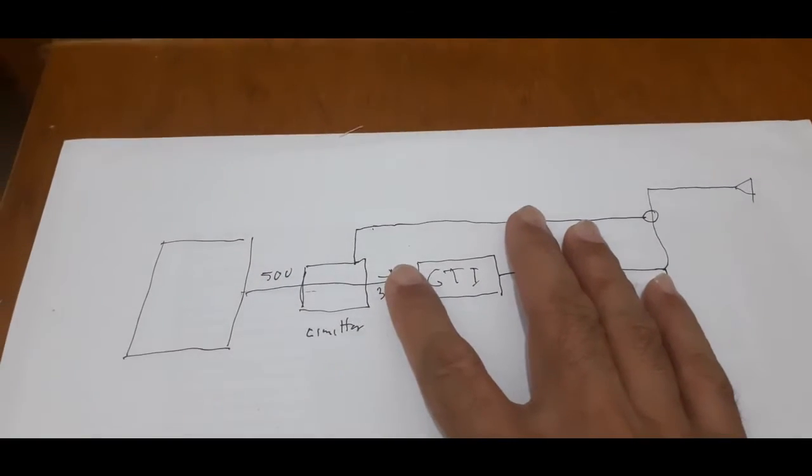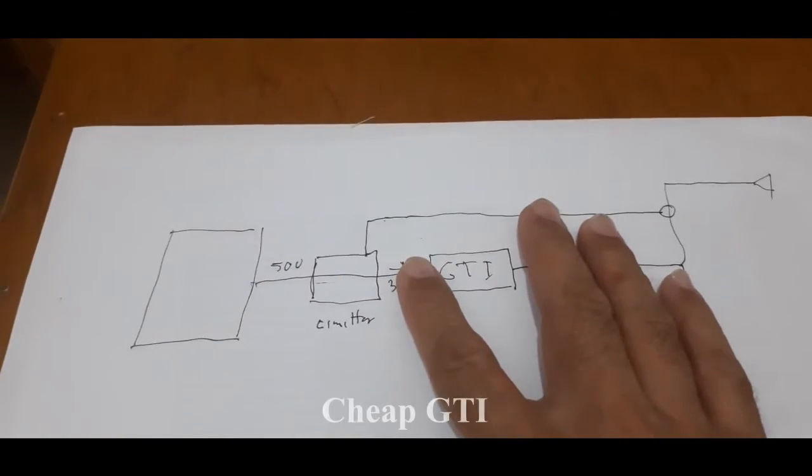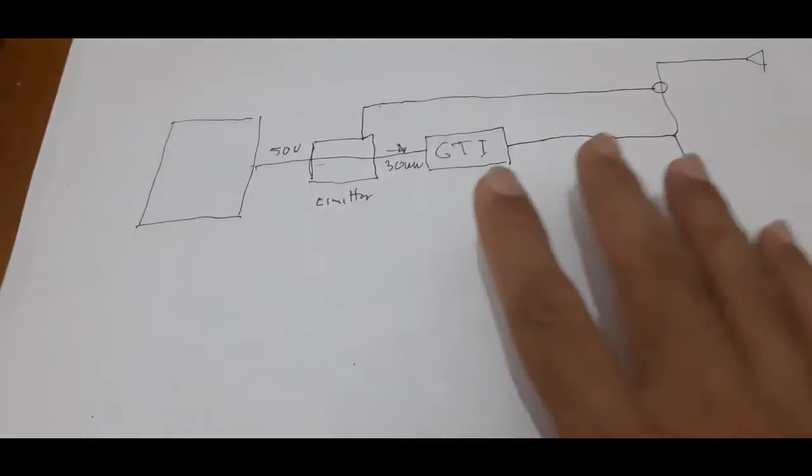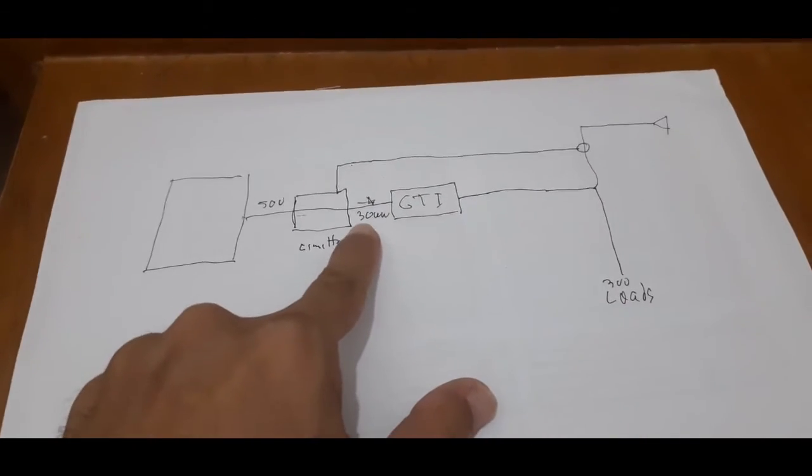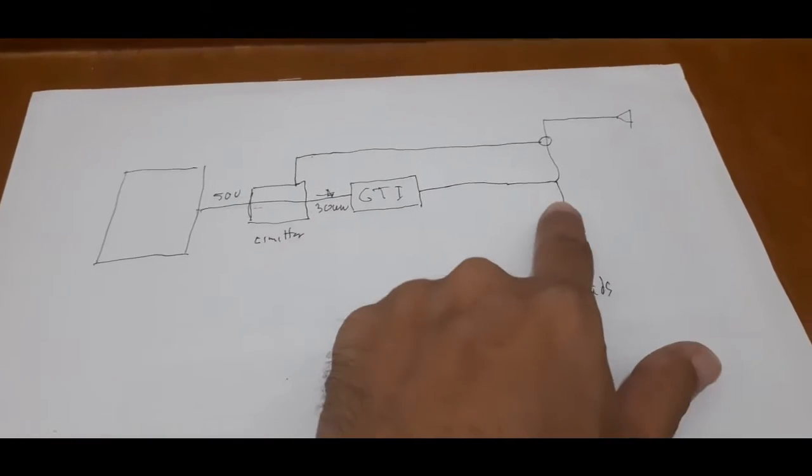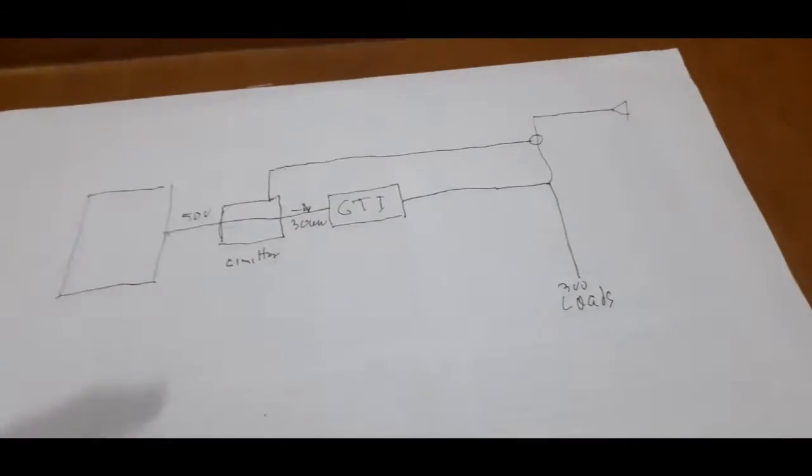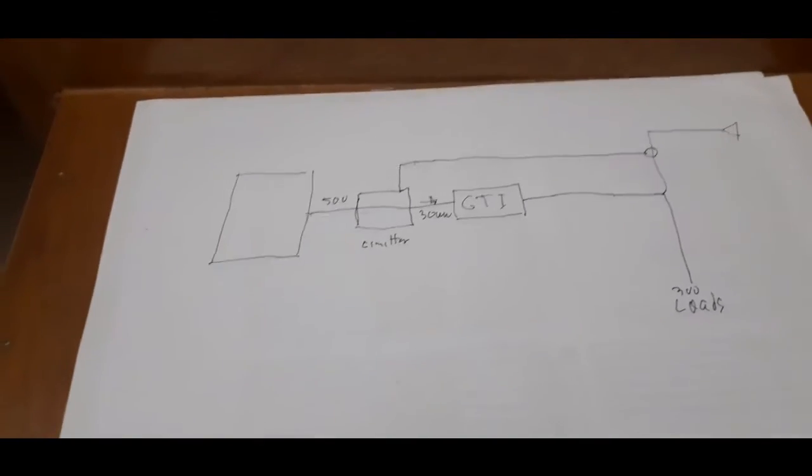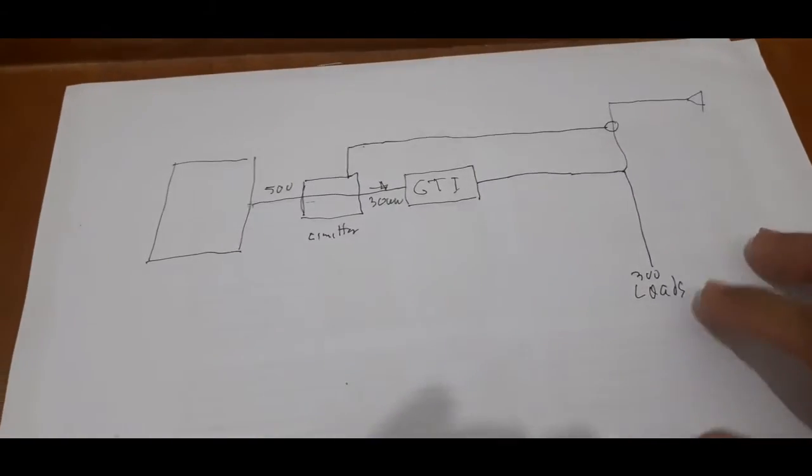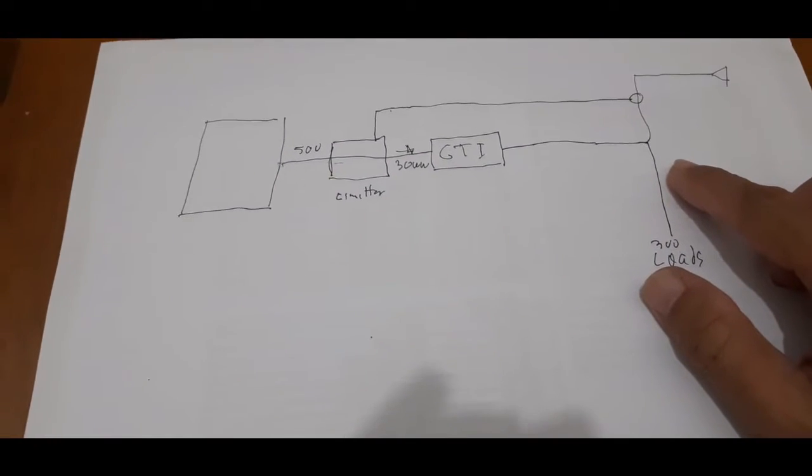The problem of the cheap grid tie inverter is they don't have a functionality to limit the power going to the grid. So that's the problem because I don't have a bi-directional meter.